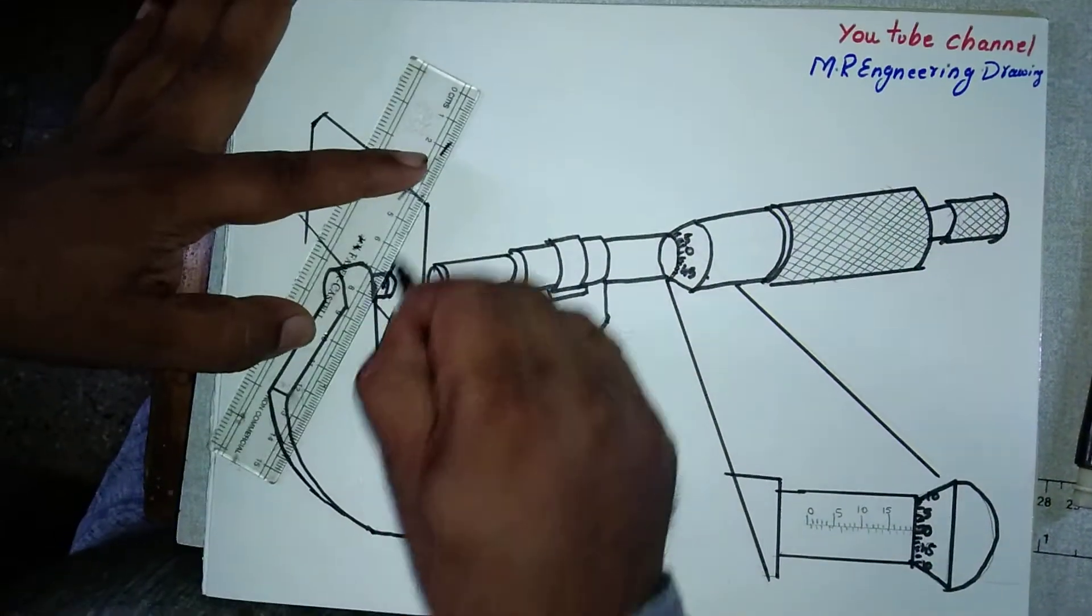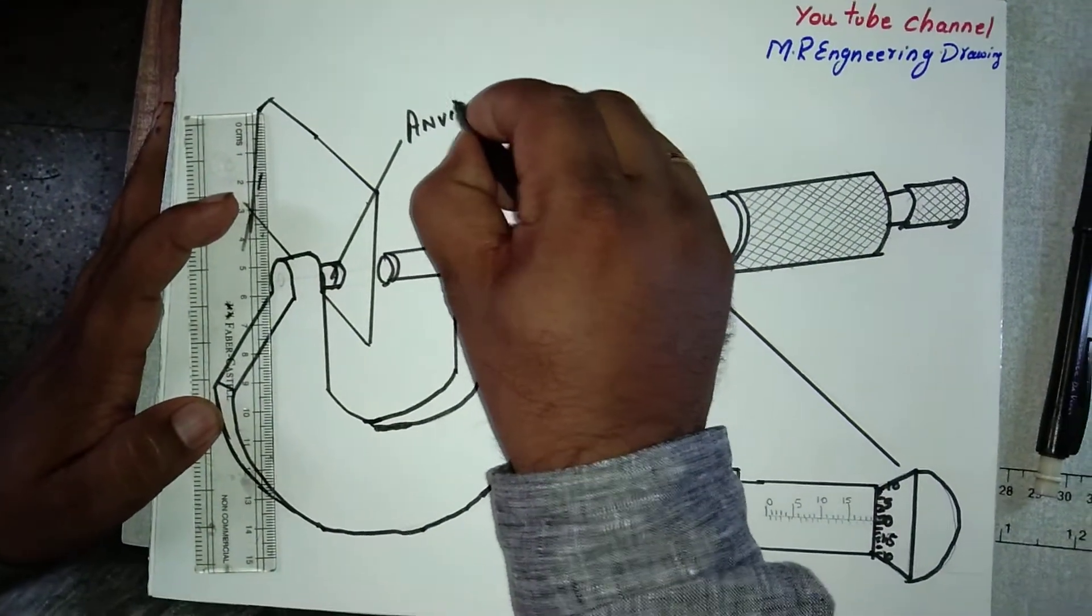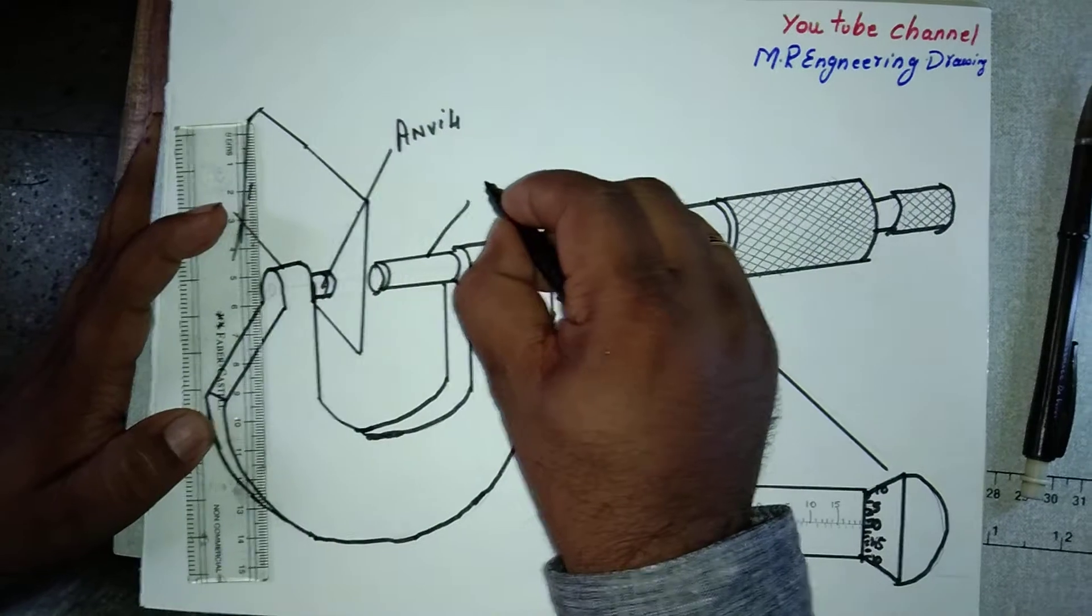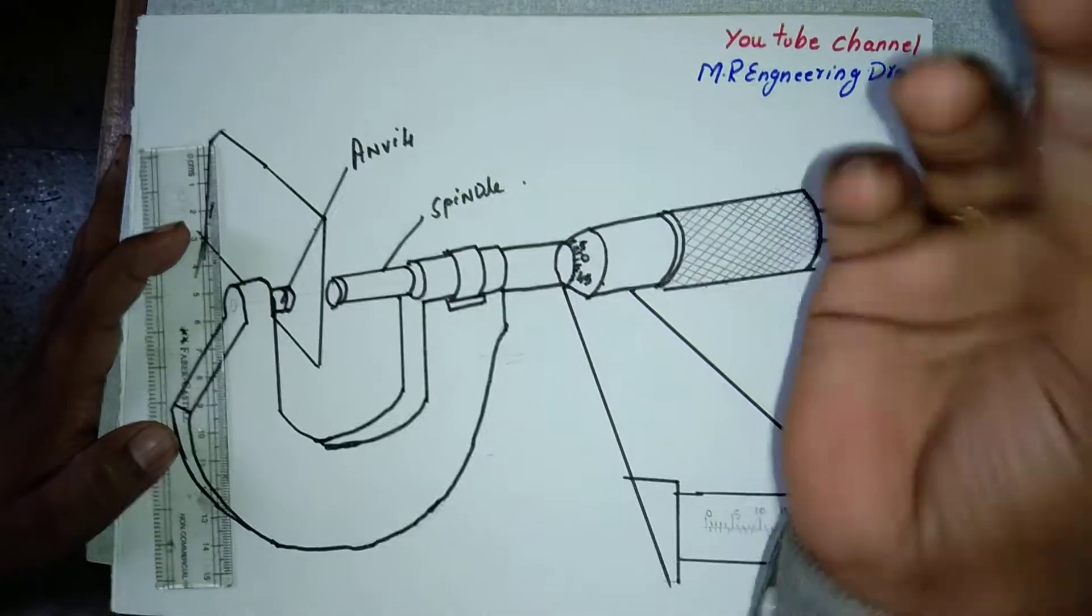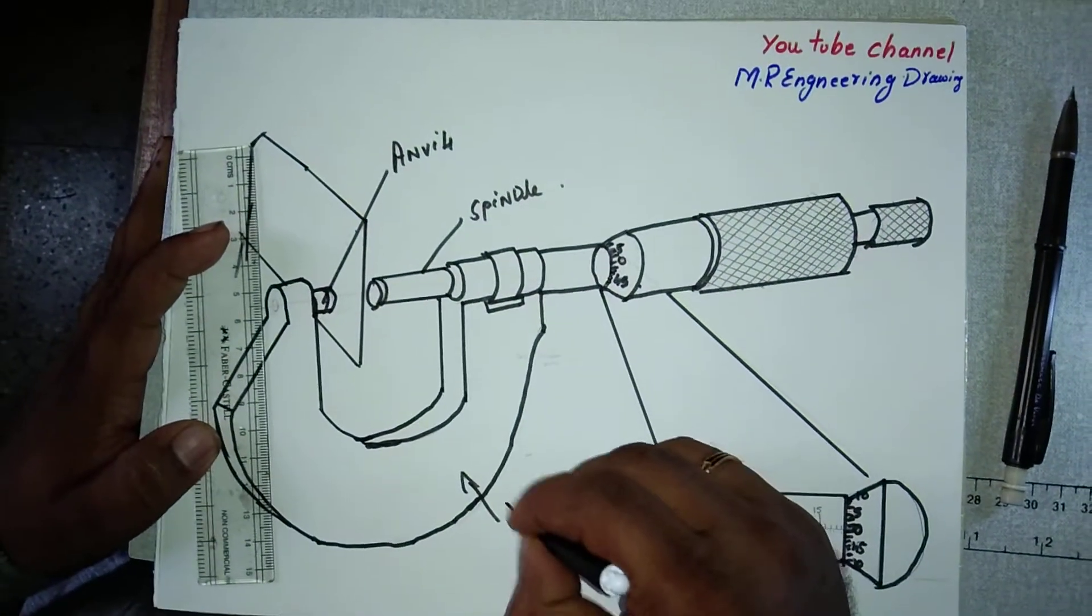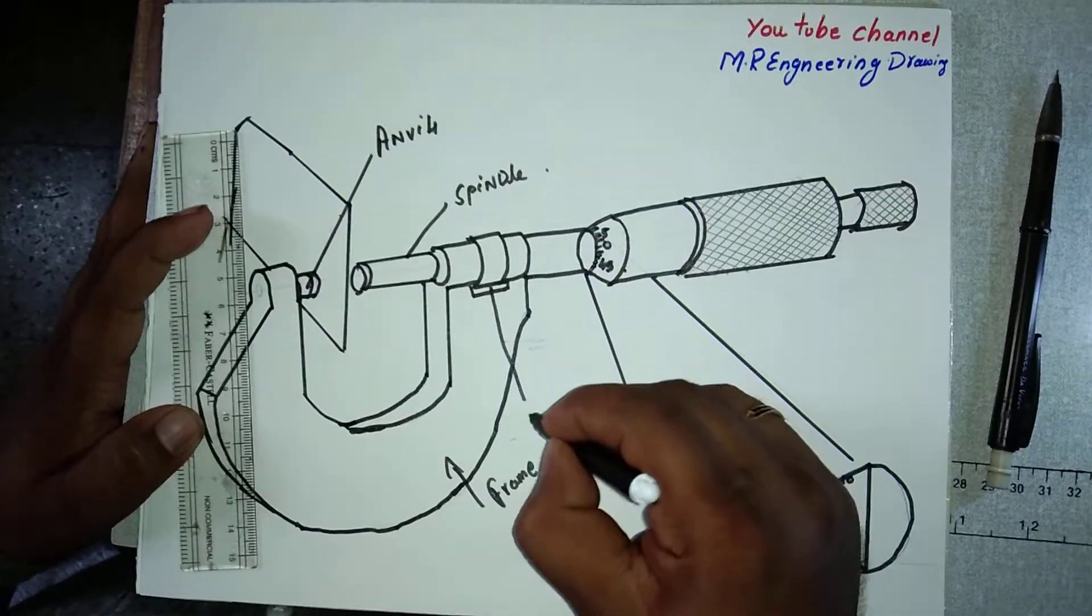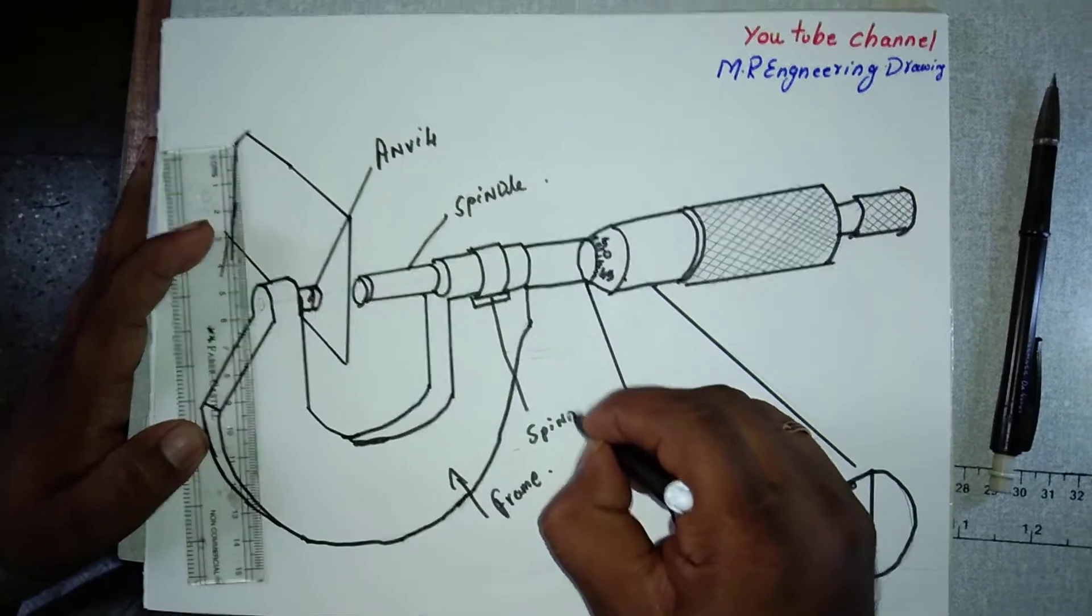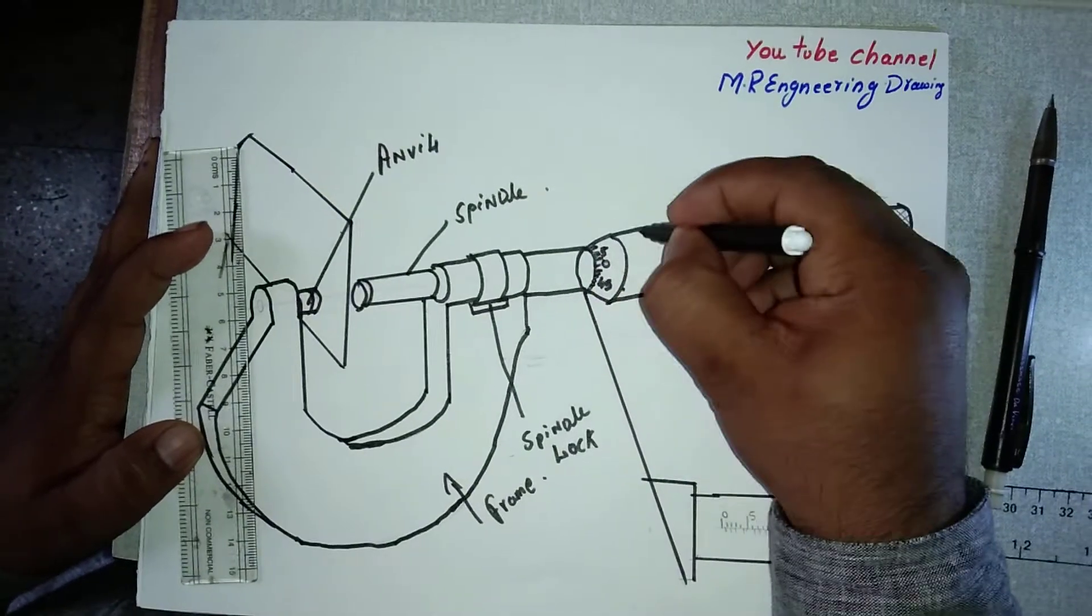This is called the anvil. This is called the spindle. If you rotate from ratchet stop, then the spindle will come to the frame which is made from cast iron. This is the spindle lock, this is the thimble.